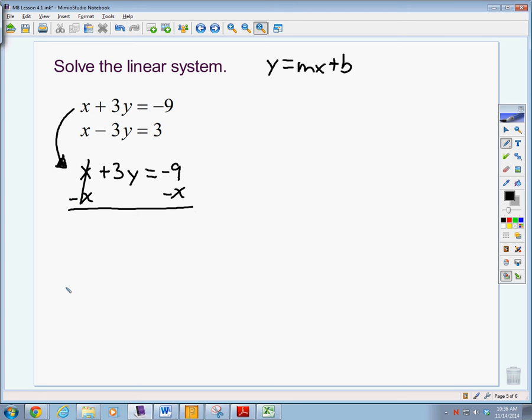My x's cancel. 1x plus negative x is 0x's. Bring down my 3y equals negative 9 combined with a negative x. Now, you can't combine these because they're not like terms.